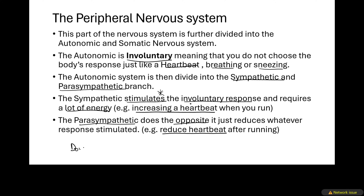They usually use the word double innervation for these two branches. Double innervation means that one of them is increasing some action while the other is decreasing some involuntary action — the sympathetic is increasing it whereas the parasympathetic is decreasing it. So they are acting oppositely to each other, but on the same system.